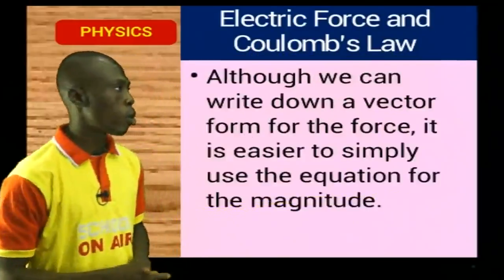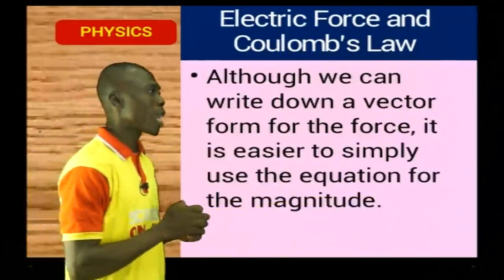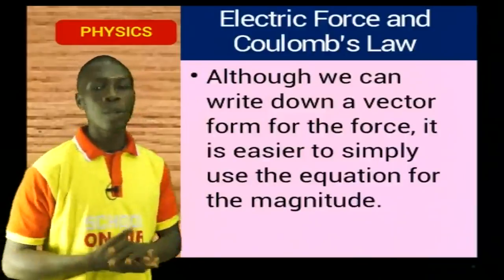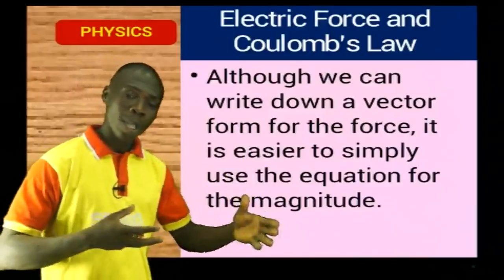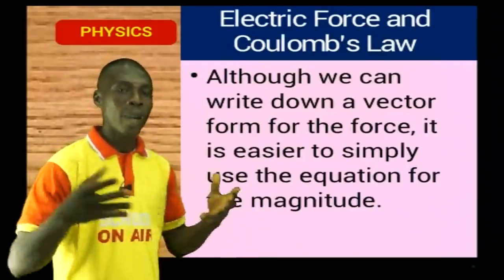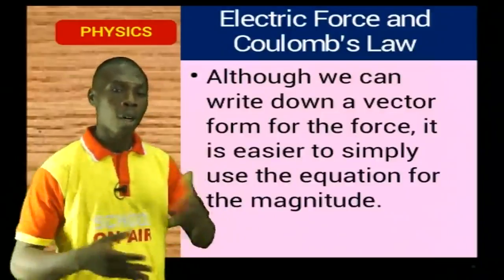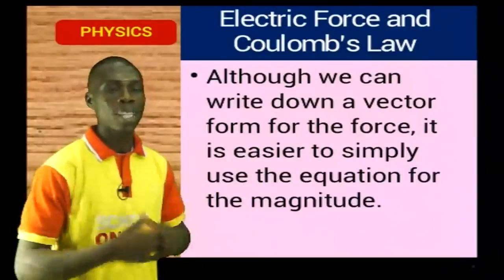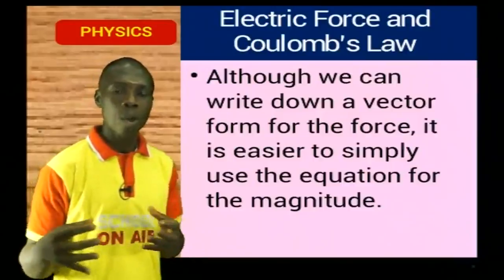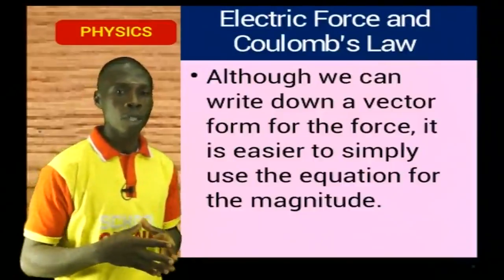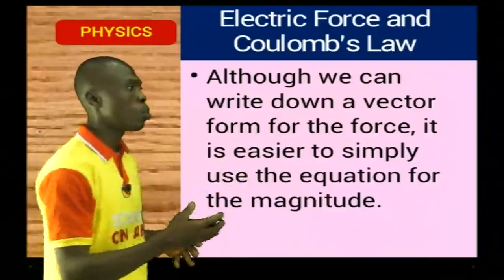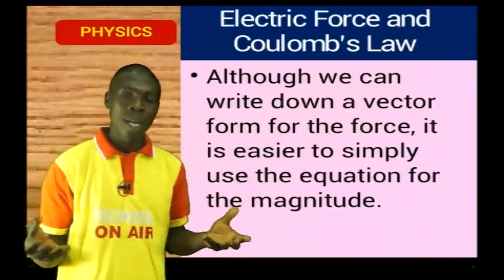Even though we know that we can write down a vector form of this force, it is easier to just use the equation for the magnitude, because of the polarity — because the charge has a positive charge and a negative charge — it is possible to want to write the vector form. The vector form will show us the direction of the charges, the repulsion, the attraction. But we are not particularly interested in that. What we want to know is the magnitude of the force of attraction. So we just ignore the trouble the vector form would give us and simply use the equation for the magnitude.